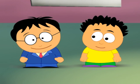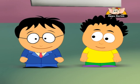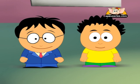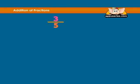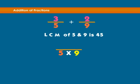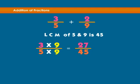Wow! Can we try one more? All right! Let's add three-fifths plus two-ninths. LCM of five and nine is forty-five. Change the first number three-fifths so that it has forty-five as the denominator.